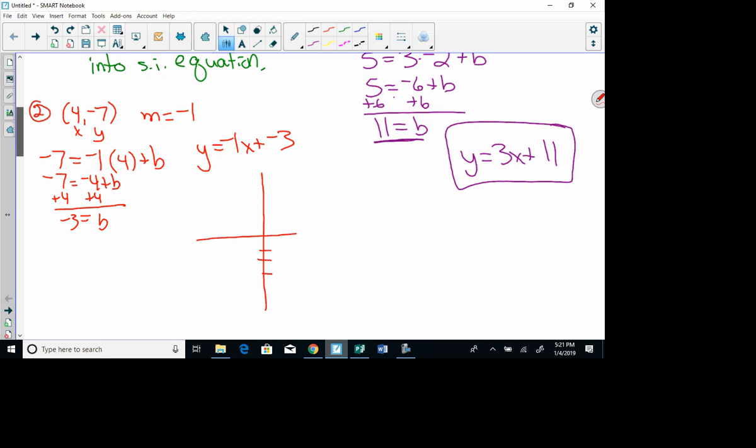And let's see, there's a line. It has a slope of negative 1. Does it go through the point 4, negative 7? Well, let's see. 1, 2, 3, 4, 5, 6, 7. So it would go through this point right here? Yep, it does. If I had a little better graph drawn, it would.